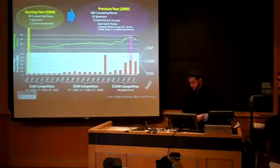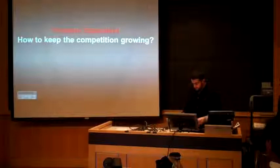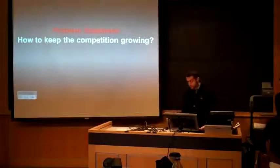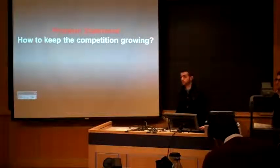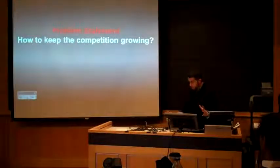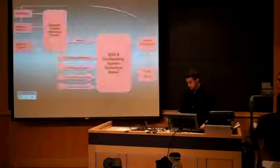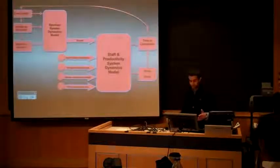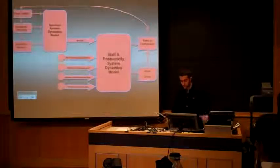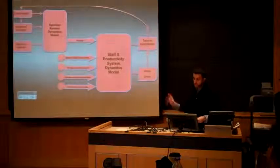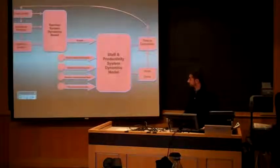What the organizers envision is growth in the number of competing teams and prize pools. The main problem they face is how to keep the competition growing in terms of competing teams and most importantly in terms of prize pools, given the limited number of volunteers that run the competition every year and the limited time they have. We developed a detailed system dynamics model. This is a simplified view showing portions of our model covering the sponsor system dynamics and staffing productivity.